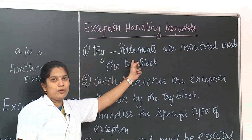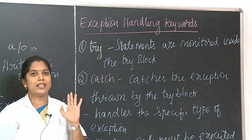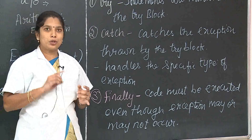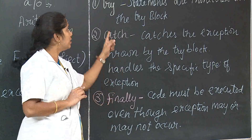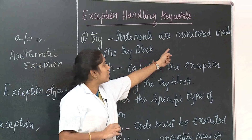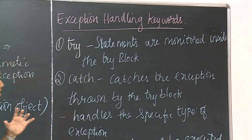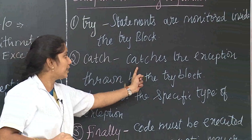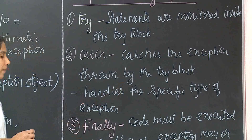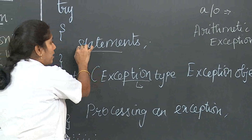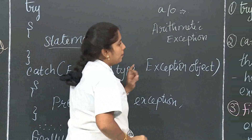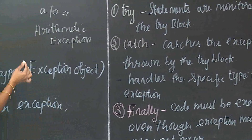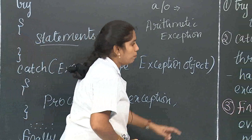The exception handling keywords in Java are basically five types: try, catch, finally, throw, and throws. The try statement monitors the code inside the try block. The catch block catches the exception thrown by the try block, handling the specific type of exception that occurred. The finally block contains code that must execute whether or not an exception occurs.